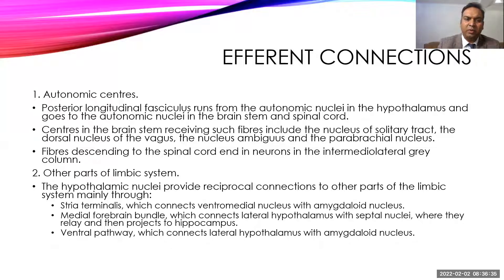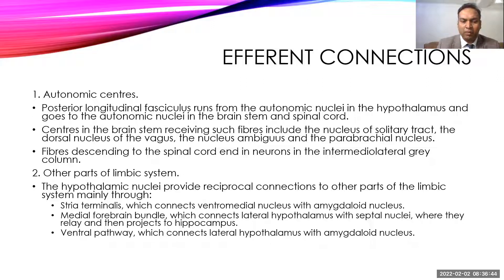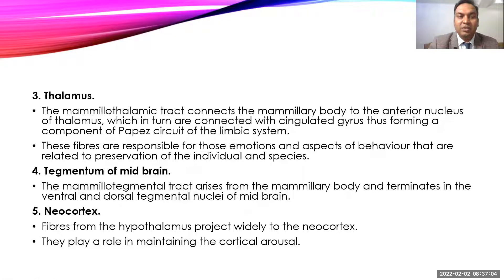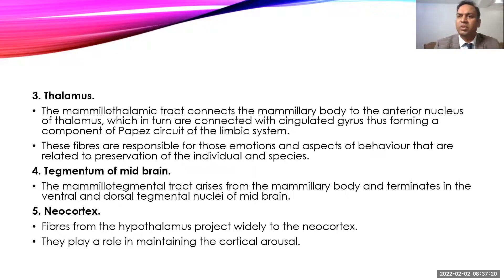Output also goes to the limbic system through structures like the stria terminalis, connecting to the ventral medial nucleus and amygdala. The medial forebrain bundle connects the lateral hypothalamus to the septal nucleus, and through ventral pathways connects to the amygdala — all related to memory and emotions. The mammillothalamic tract connects the mammillary body to the anterior nucleus of the thalamus, which then connects to the cingulate gyrus, forming a component of Papez circuit — responsible for emotions and behavioral aspects.